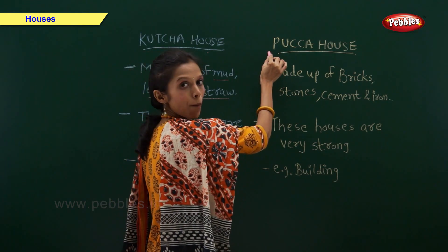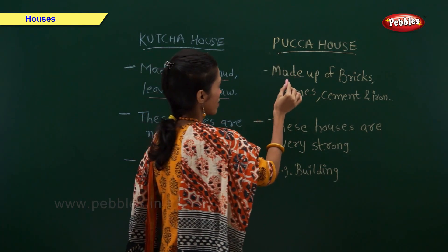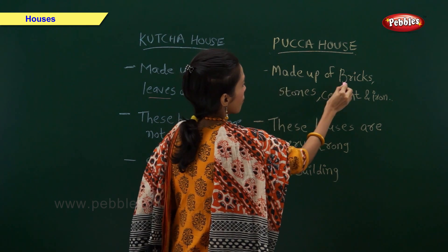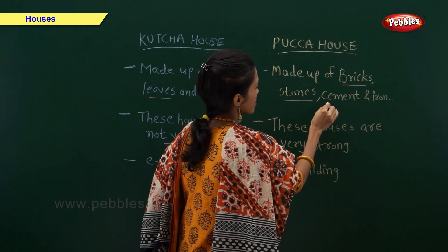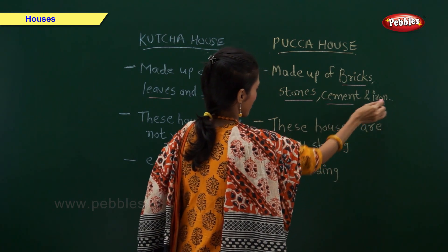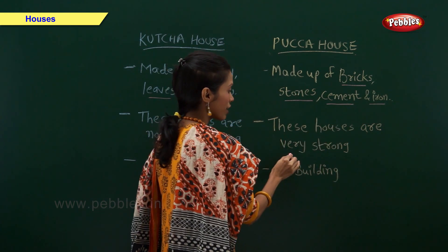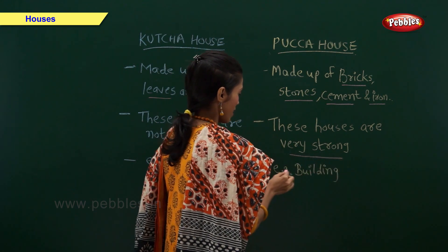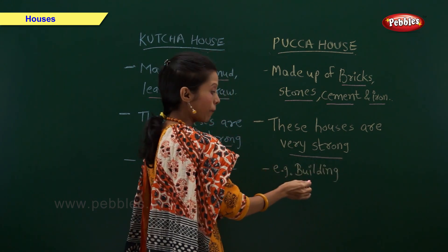Second, Pakka house. Pakka houses are made up of bricks, stones, cement and iron. These houses are very strong. An example of a Pakka house is a building.